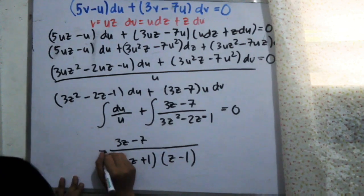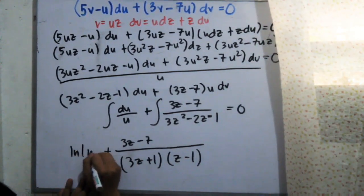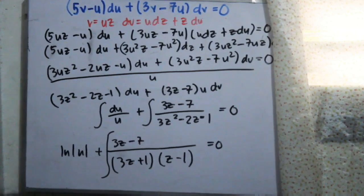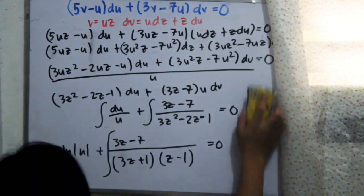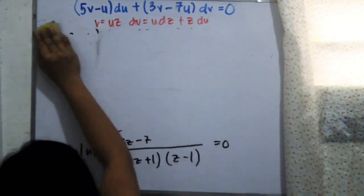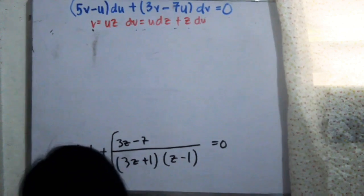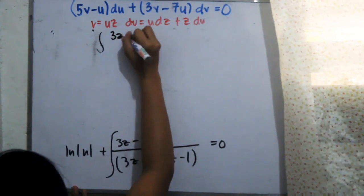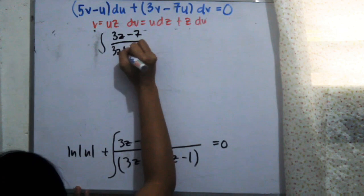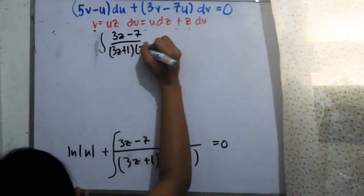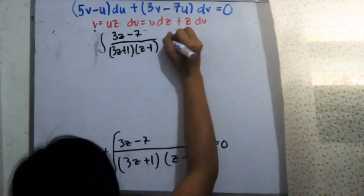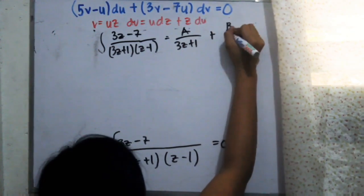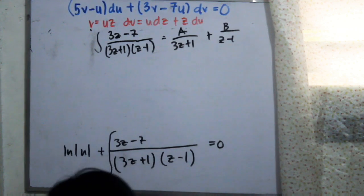We know that the integral of du over u is simply ln u plus C. For the second part we use partial fraction integration. The denominator factors as (3z plus 1) multiplied by (z minus 1). We set A over (3z plus 1) and B over (z minus 1).